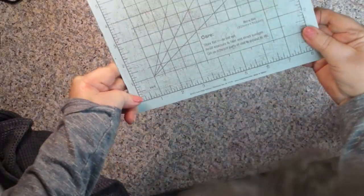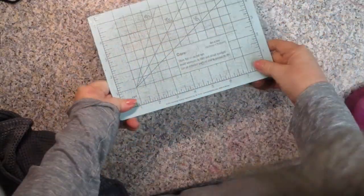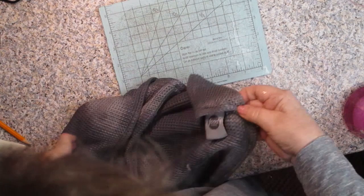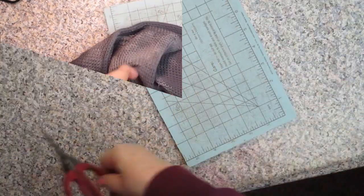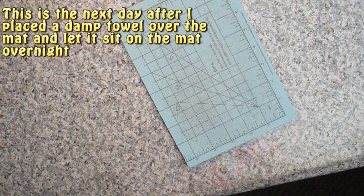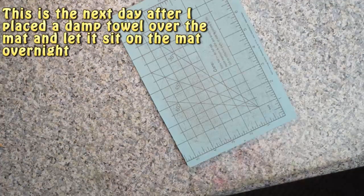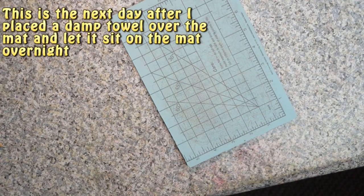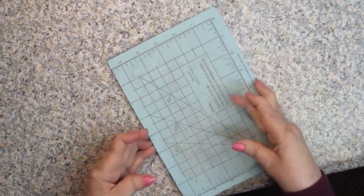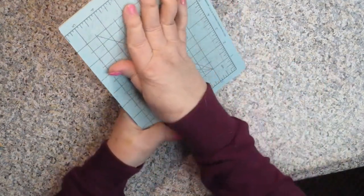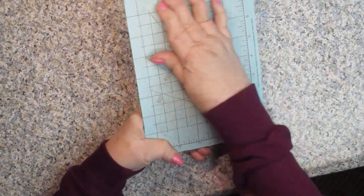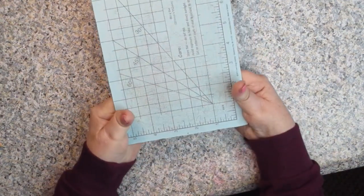So this is what it looks like before I'm going to put the towel on it. And here's my towel. So I wanted to show you what it looks like when it's done. This is just after letting the cloth sit on it overnight. Look how much better it looks. It doesn't look really cut at all and it looks ready to go.